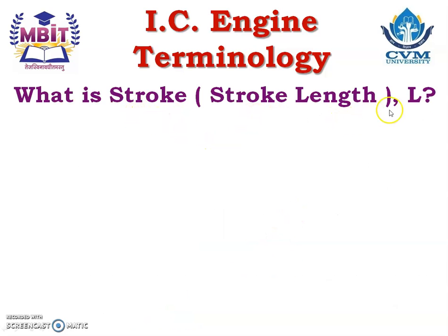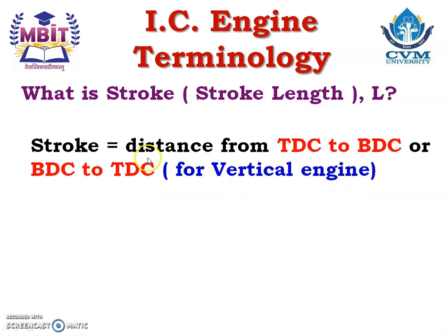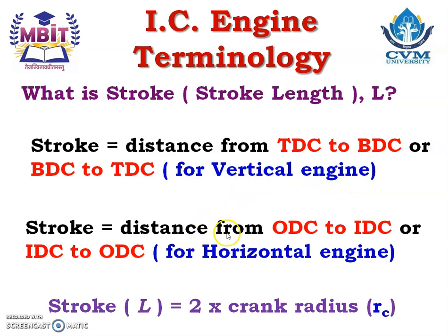What is stroke or stroke length? It is denoted by capital L. Distance traveled by piston from one dead center to another dead center is called stroke or stroke length. So stroke is equal to distance traveled from TDC to BDC or BDC to TDC for a vertical engine, or distance traveled by piston from ODC to IDC or IDC to ODC for a horizontal engine.